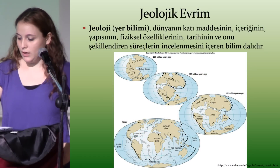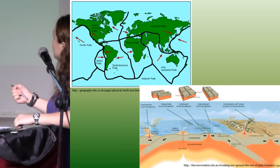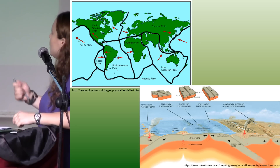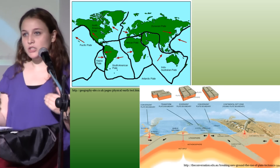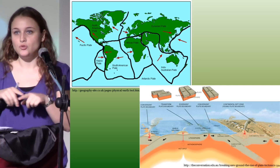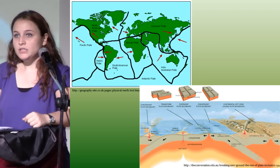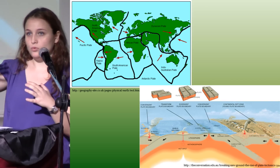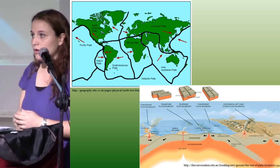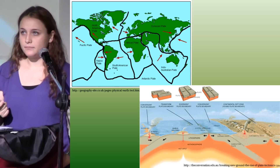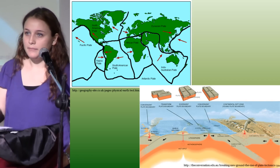Bu kıtalar nasıl hareket eder? Yeryüzünde çeşitli levhalar var; örneğin Pasifik levhası, Nazca levhası, Güney Amerika levhası gibi. Bu levhalar sürekli hareket ediyor: birbirine doğru yaklaşma hareketi, birbirinden uzaklaşma hareketi ya da birbiri üzerinde sürtünme hareketi gösteriyorlar. Birbirlerine yaklaştıklarında dağlar oluşuyor. Uzaklaştıklarında ise magma yeryüzüne çıkıyor ve yeni levhalar oluşabiliyor ya da volkanik patlamalar meydana geliyor. Sürtünme hareketine örnek olarak da depremler en büyük etken; Erzincan bölgesindeki levha hareketi bunun bir örneğidir.